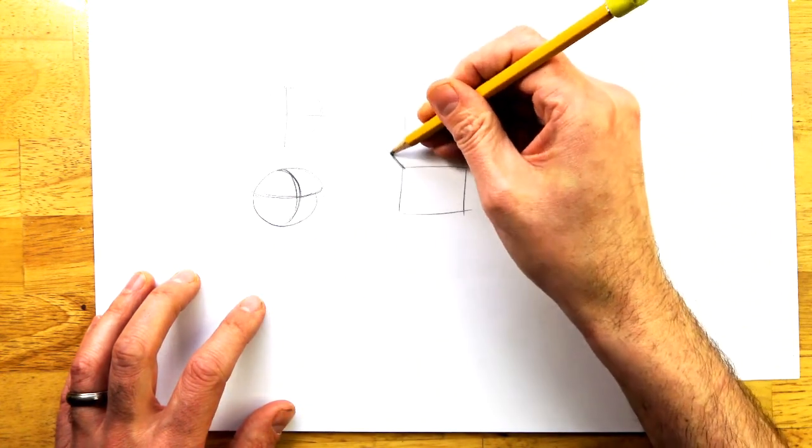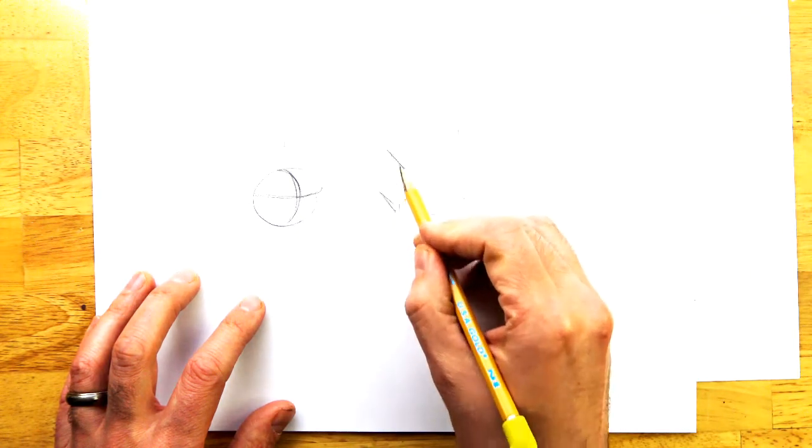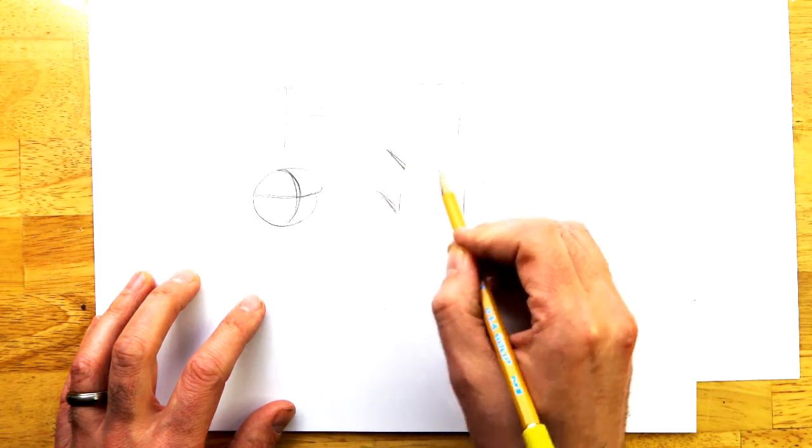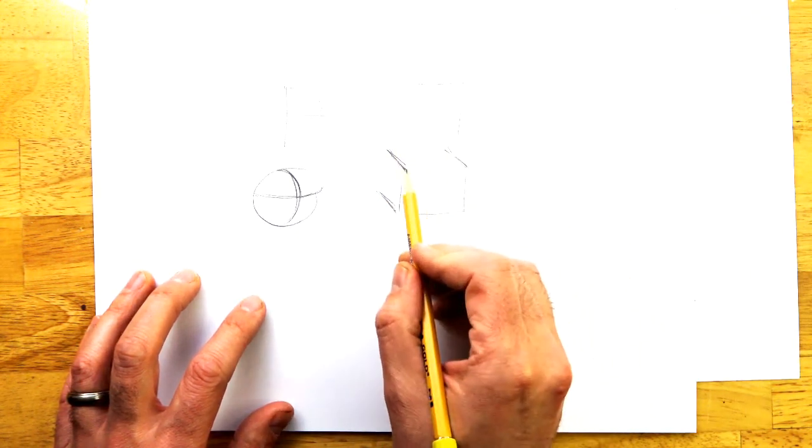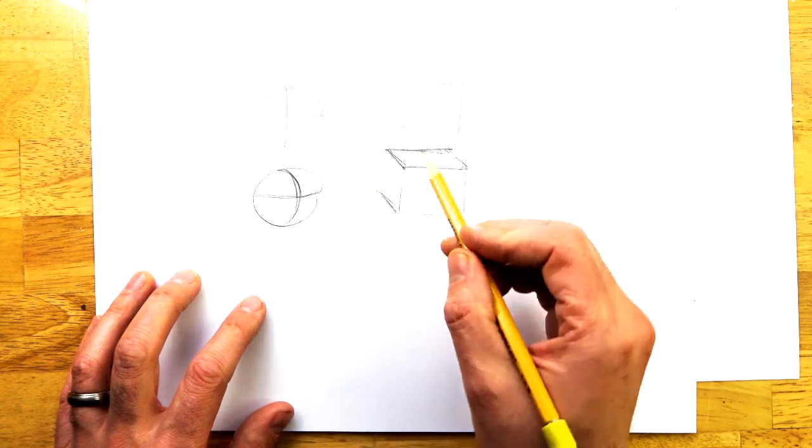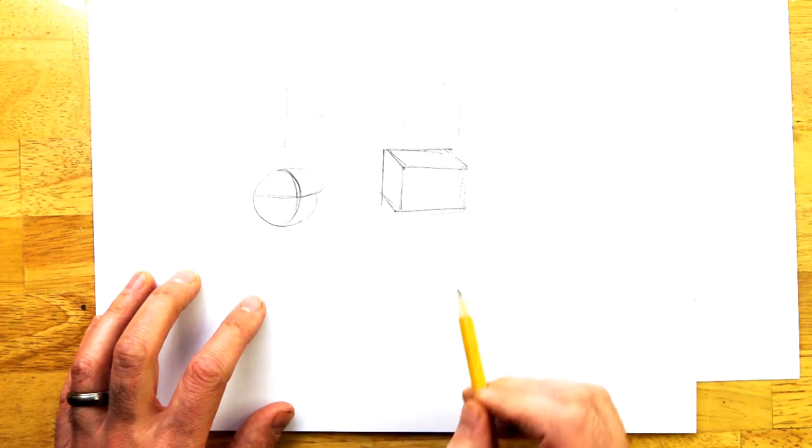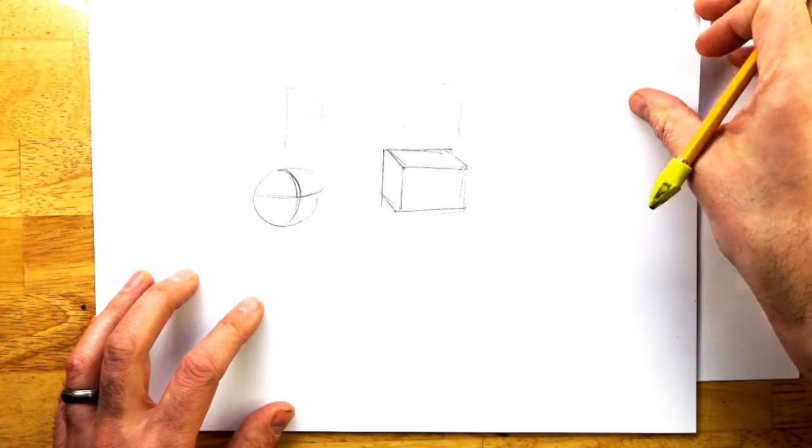And for our square, we would add some diagonal lines - they'd all be parallel to one another, and then we would need some lines parallel to this for the back. And we've got our cube. So that's how we're going to draw our hippo today, using those kinds of shapes.